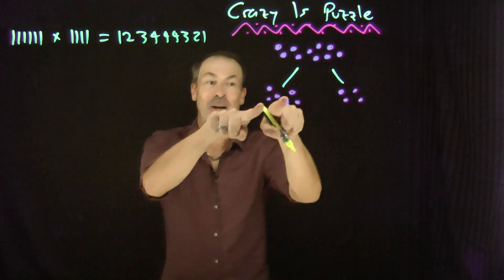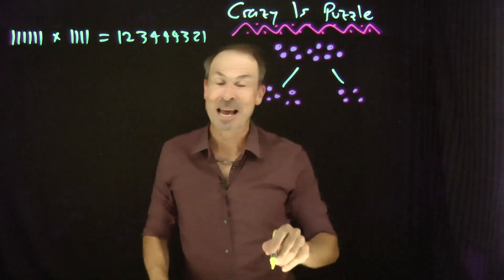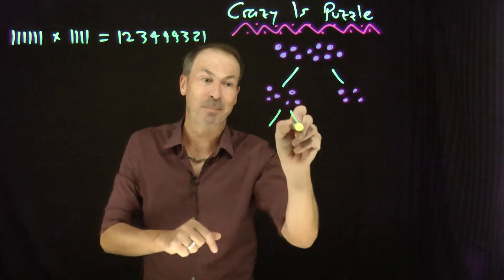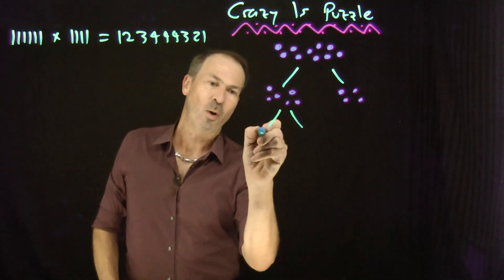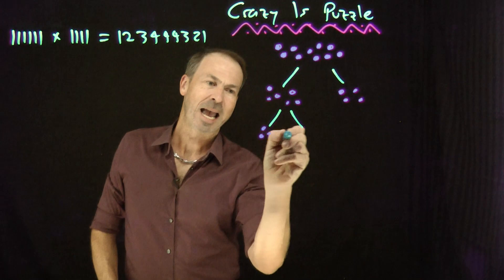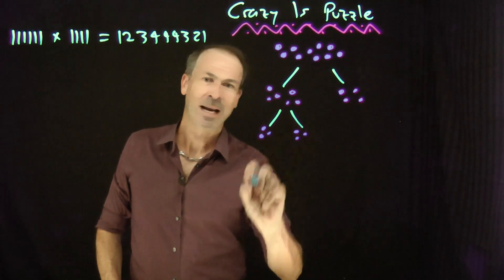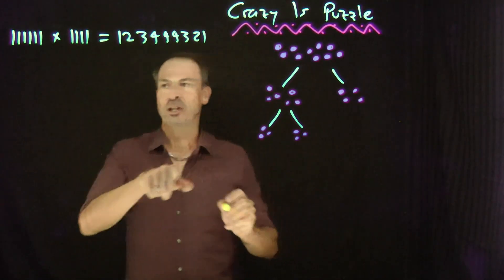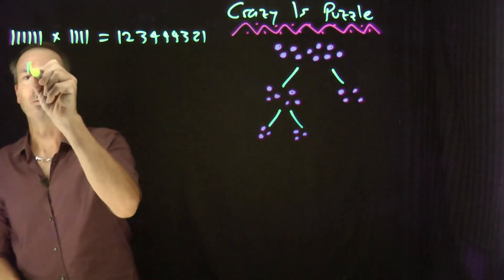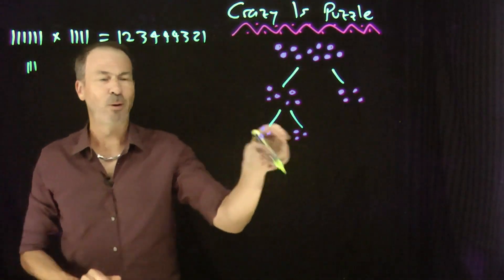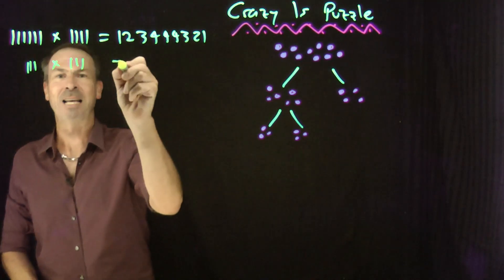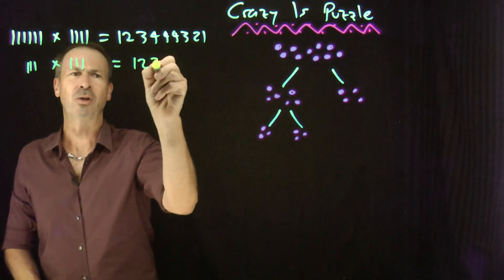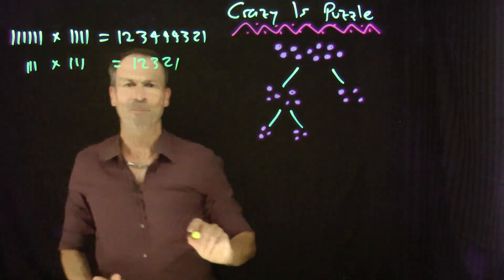And then you keep doing it with the piles you have right now. So that 6 might split into say a 3 and a 3. Write a 3-digit number of ones: 111. Times another 3-digit number of ones: 111. We multiply them together and this is 12321.